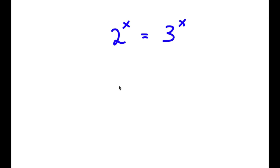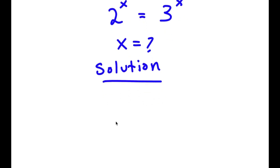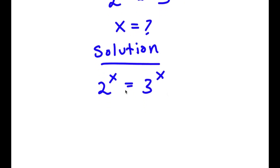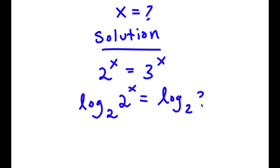In this problem, I have 2 to the power of x is equal to 3 to the power of x. So I obviously want to find the value of x here. For my solution, I'm going to first start by writing 2 to the power of x is equal to 3 to the power of x, and I'm going to take the log of base 2 on both sides. So now I have log base 2 of 2 to the power of x is equal to log base 2 of 3 to the power of x.